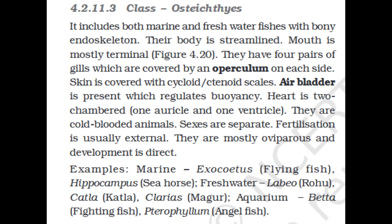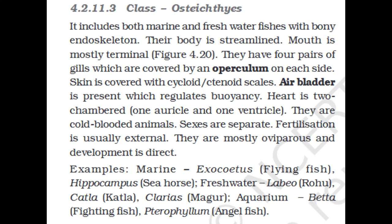Section 4.2.11.3: Class Osteichthyes. It includes both marine and freshwater fishes with a bony skeleton. Their body is streamlined and the mouth is mostly terminal. They have four pairs of gills covered by an operculum on each side. Skin is covered with cycloid or ctenoid scales. The air bladder is present, which regulates buoyancy. The heart is two-chambered (one auricle and one ventricle). They are cold-blooded animals. Sexes are separate; fertilization is usually external. They are mostly oviparous and development is direct. Examples: Exocoetus (flying fish), Hippocampus (seahorse), Labeo (rohu), Catla (catla), Clarias (catfish), Betta (fighting fish), Pterophyllum (angelfish).